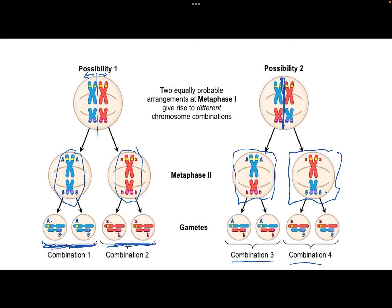This happens with every single chromosome pair. For humans, this happens with 23 different sets of chromosomes — 22 non-sex chromosomes, and then the X and Y or the two X chromosomes — all divided randomly. Which means for humans, there are 2 to the 23 possible arrangements of chromosomes. That's a two followed by 23 zeros — a lot of different arrangements. So because we have all these different arrangements, no two gametes are ever going to look exactly the same.